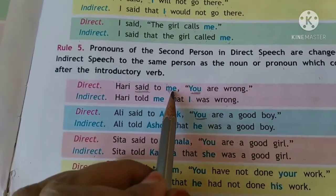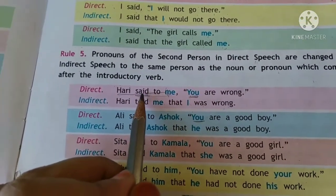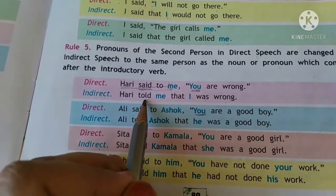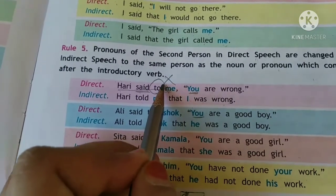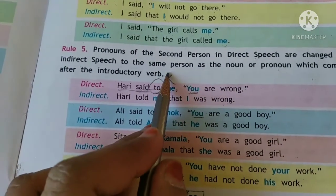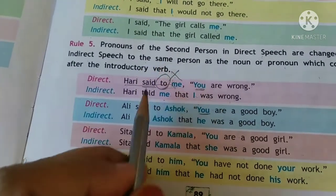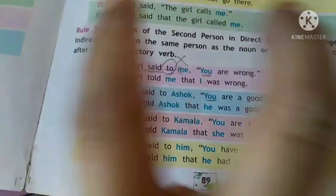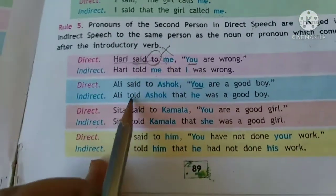When two people are talking, the introductory verb 'said' becomes 'told', and the preposition 'to' is omitted — we do not write it in the indirect. 'Said' becomes 'told' because two people are talking among themselves.